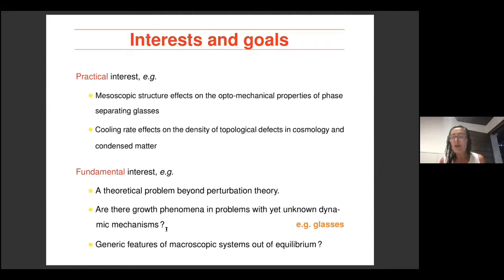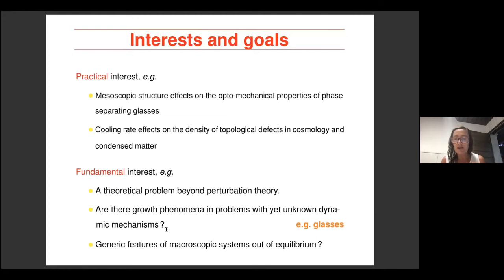You can ask fundamental questions like what happens in glasses, which we don't understand so well. We don't know the equilibrium phases, we don't know where the system is trying to go. You can ask whether coarsening or domain growth phenomena are hidden somewhere in their evolution. There are also issues about the generics of macroscopic systems out of equilibrium that you can ask in this context and maybe later apply to other cases.